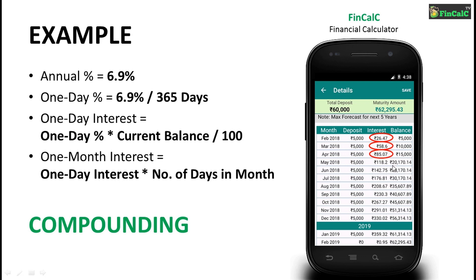So as you can see, in the month of May which is the 4th month, the total balance becomes equal to Rs 20,170.14. This comes from the principal amounts paid for the 4 months, i.e., February to May. Apart from the principal amounts, the interest earned for the months of February, March and April is also added in this 4th month.